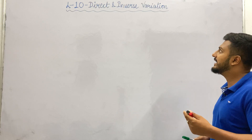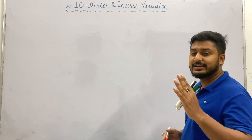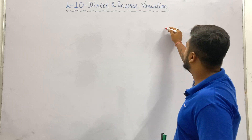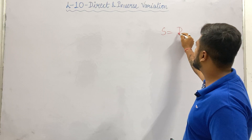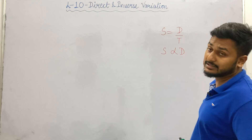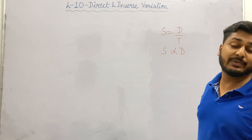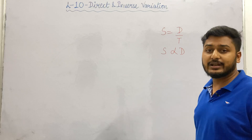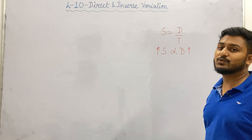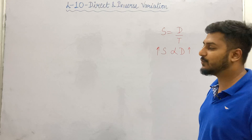So first we will understand what is direct variation. Direct variation means that when one thing increases, the other thing also increases — which we call directly proportional. For example, we know speed equals distance divided by time. So in this scenario, speed is directly proportional to distance. If we increase speed, the vehicle will cover more distance. So when one thing increases and the other also increases, that is known as direct variation.